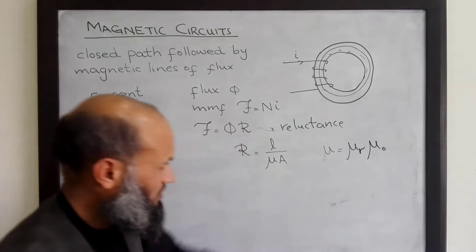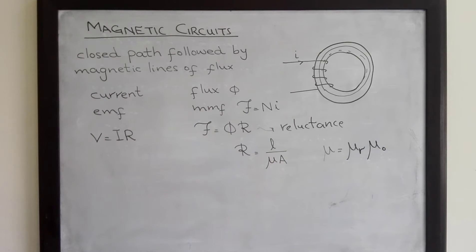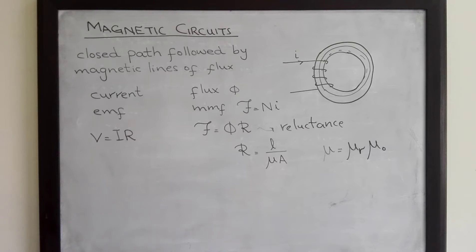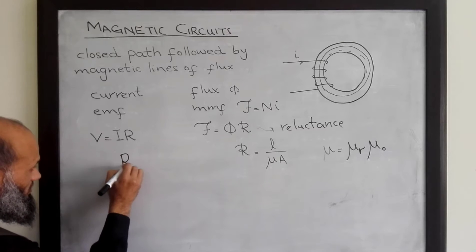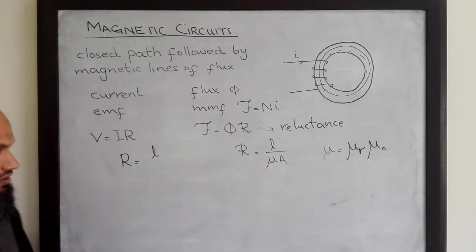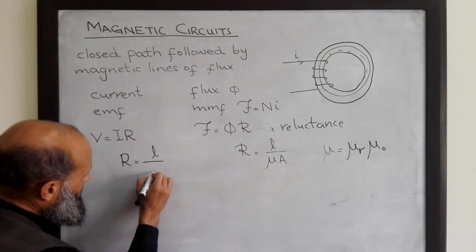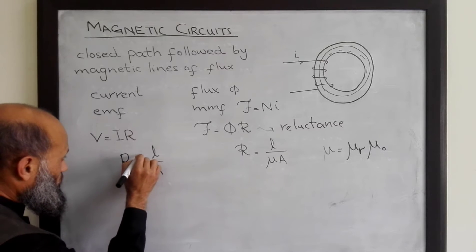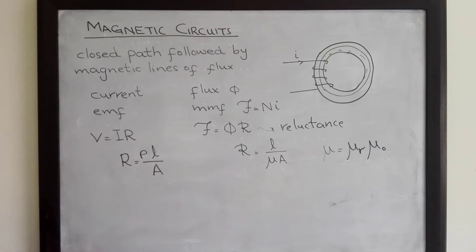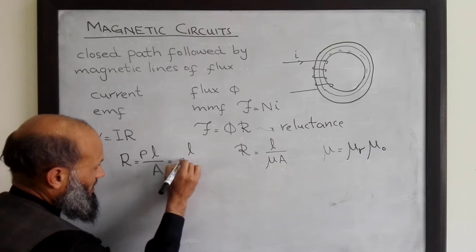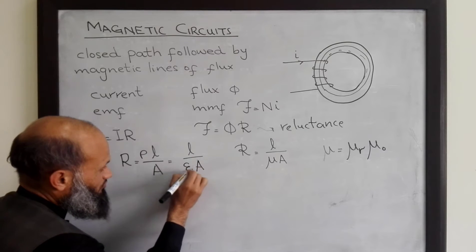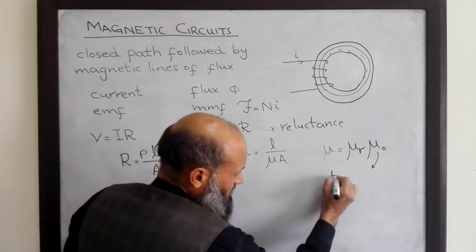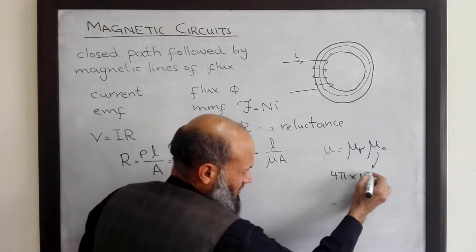Mu equals mu_R times mu_naught, where mu_naught is the permeability of free space and mu_R is relative permeability. This expression is quite similar to the expression for resistance, which is also proportional to length, inversely proportional to cross-sectional area, and proportional to resistivity. The numerical value of mu_naught is 4π × 10⁻⁷.